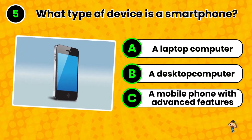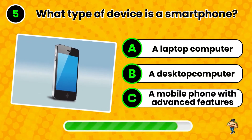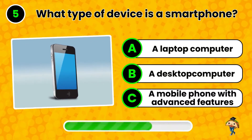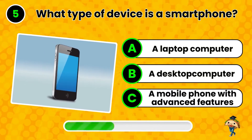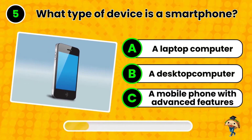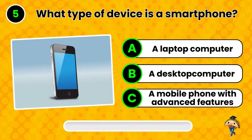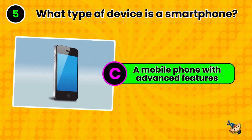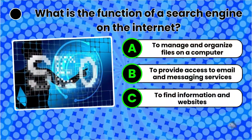Question 5. What type of device is a smartphone? A mobile phone with advanced features. That's right. Next question.